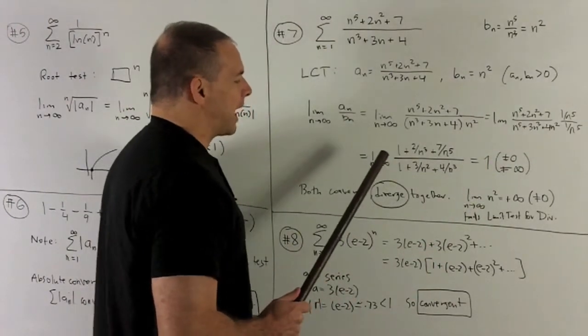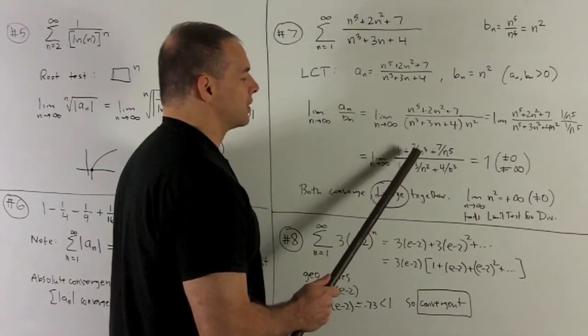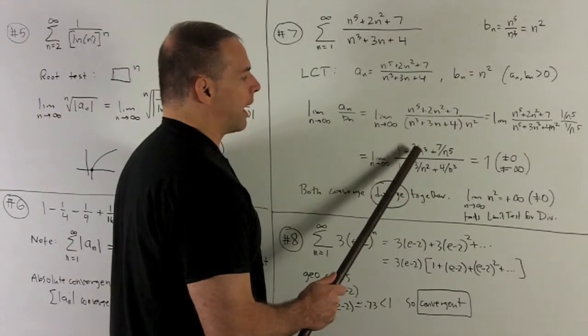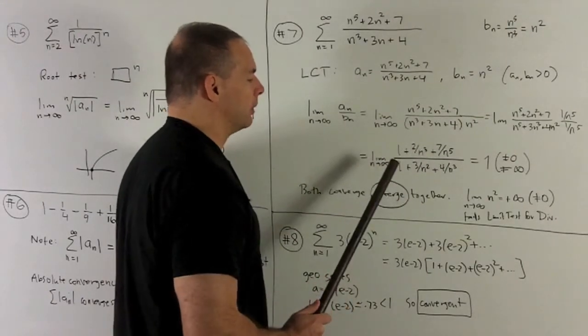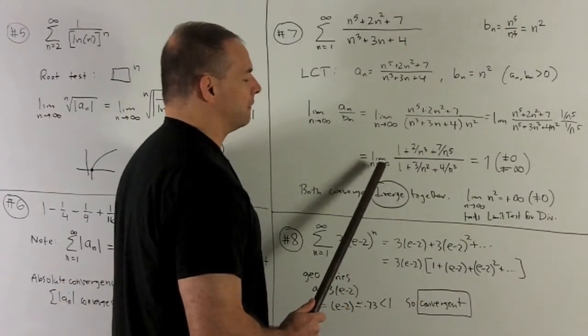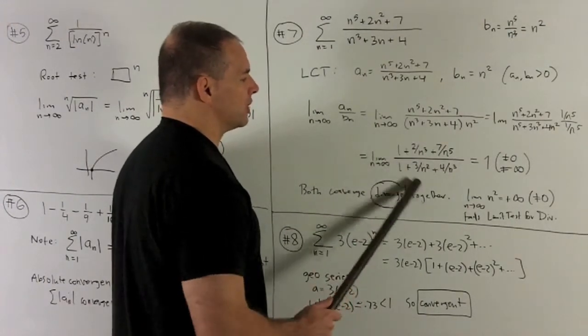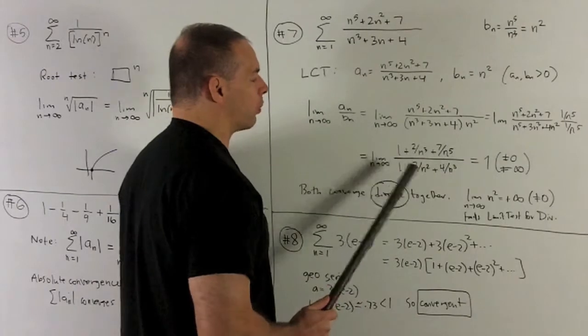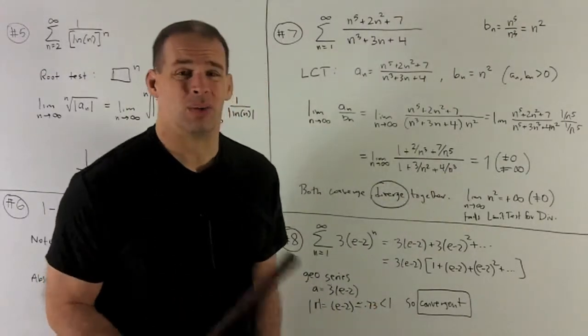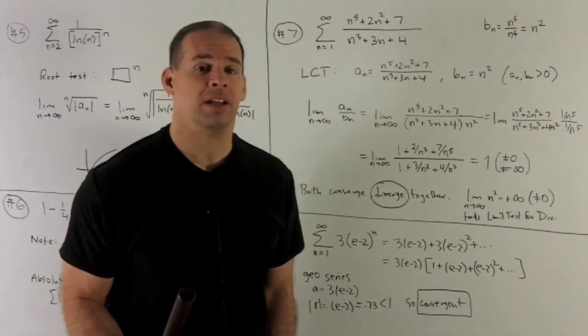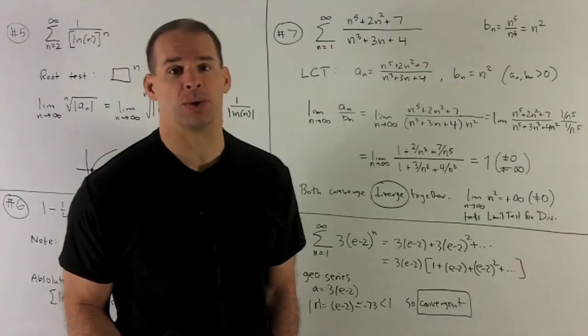So I do that. Then what's going to happen is, we're going to have a 1 plus things over powers of n on the top and bottom. We'll take the limit of n going to infinity. These terms with the n's in the bottom will go to 0, and so I'll be left with 1 over 1, which is 1, which is not 0, and it's not infinite. So limit comparison test is going to apply here.